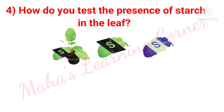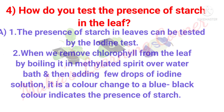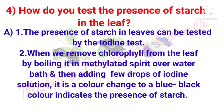How do you test the presence of starch in the leaf? First point: The presence of starch in leaves can be tested by the iodine test. Second point: When we remove chlorophyll from the leaf by boiling it in methylated spirit over a water bath, and then add a few drops of iodine solution, a color change to blue-black indicates the presence of starch.